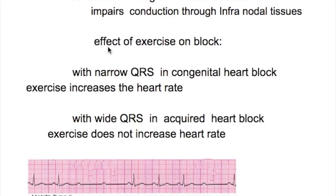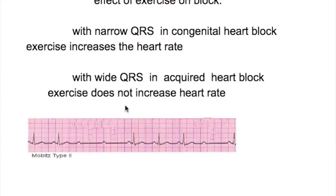Regarding the effect of exercise on a block in relation to the QRS complex: with a narrow QRS complex in congenital heart blocks, exercise increases the heart rate. Whereas with a wide QRS complex in acquired heart blocks, exercise does not increase the heart rate.